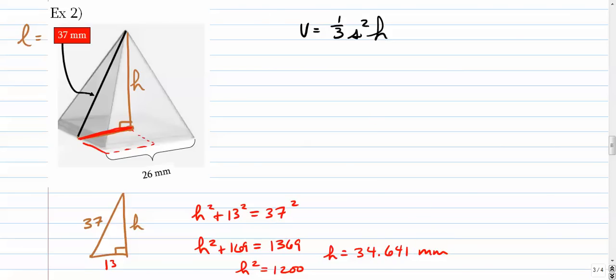There's your height. Your side, of course, is 26. So you just plug that stuff in. 26 squared times a third times 34.641, and you're good to go. That gives you 7805.